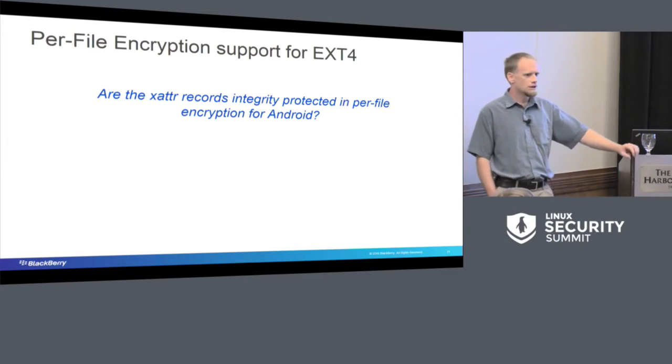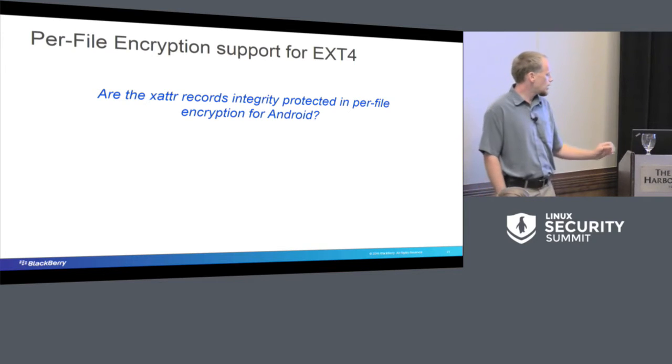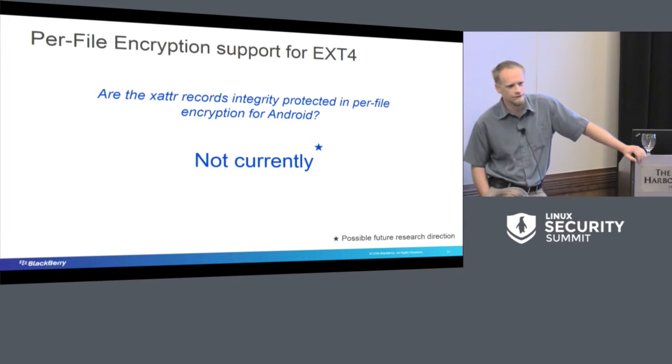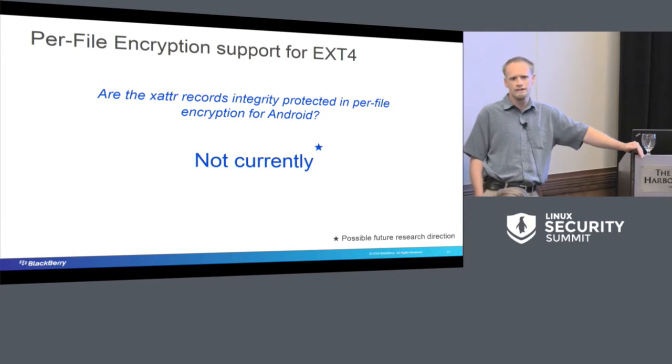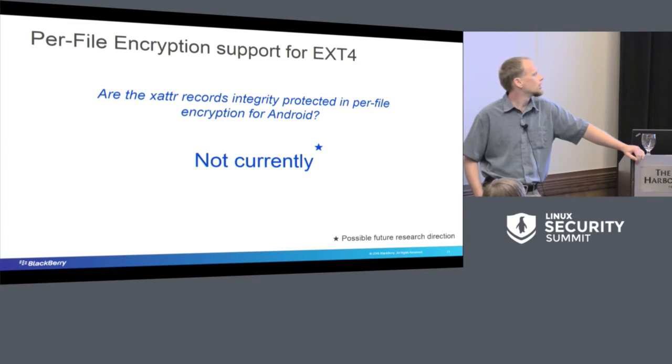Uh-oh. Per file encryption. Let's throw out DM Verity now and let's go to per file encryption. It is coming. It has dropped in ext4. I don't know whether it's on mainline yet. But are the extended attribute records for ext4 integrity protected? Are they encrypted? Well, not currently. The only thing that is actually protected by ext4 encryption or per file encryption is the name of the file and the contents of the file. So you can have a file that you can't actually read the contents of if you're an offline attacker.